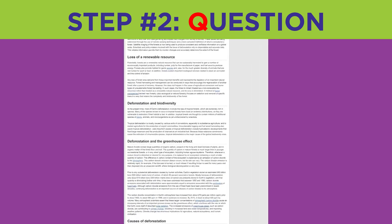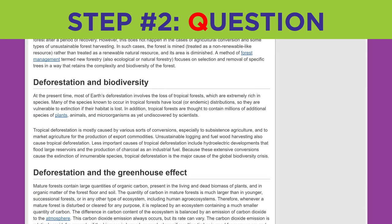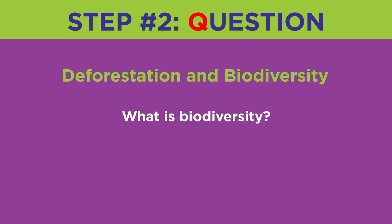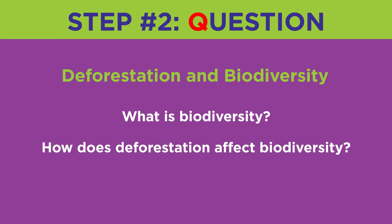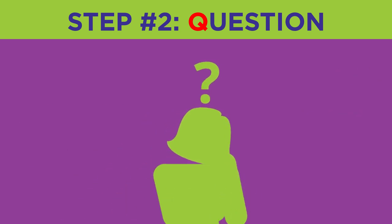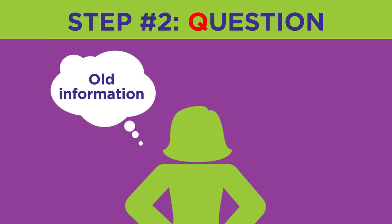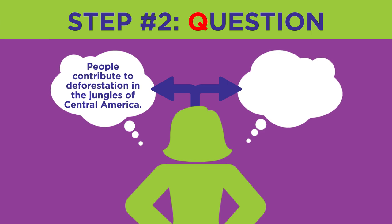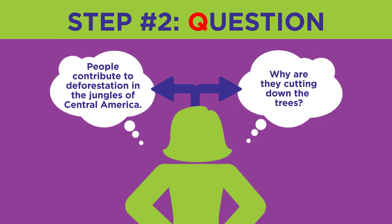One of the headings in the article about deforestation is Deforestation and Biodiversity. After reading the heading, you might have these questions: What is biodiversity? How does deforestation affect biodiversity? Why does it matter? From the heading Causes of Deforestation, you might wonder: what are the causes of deforestation? Also, ask yourself what you already know about those topics. Even if you don't know much, this helps your brain associate new information with old information, making it easier to remember. For example, you may already know that people are contributing to deforestation in the jungles of Central America and wonder why they're cutting down the trees.